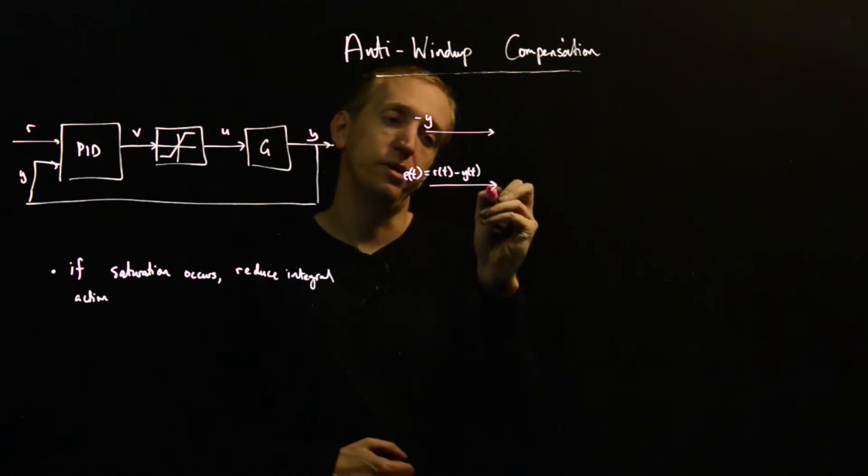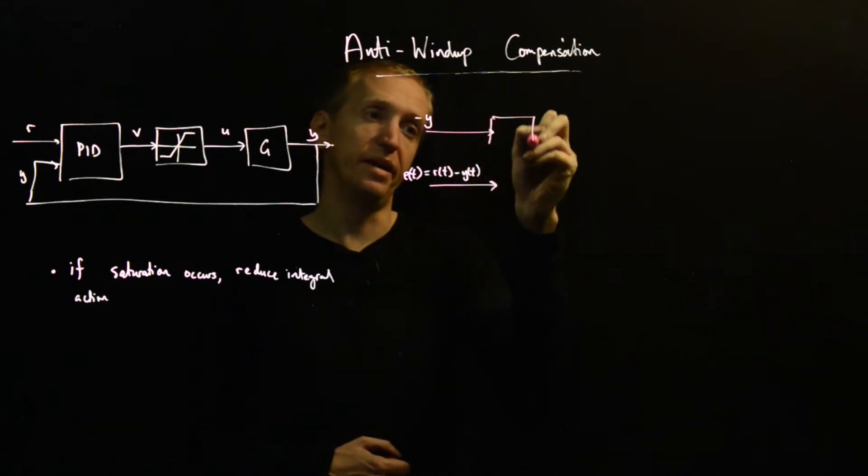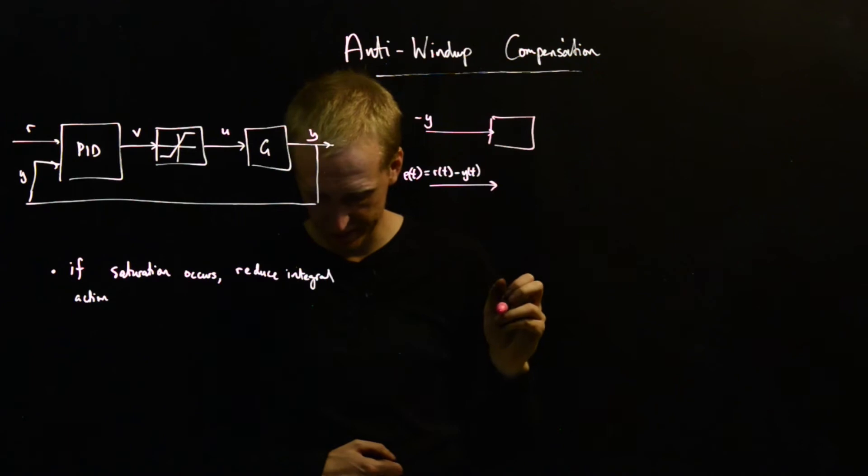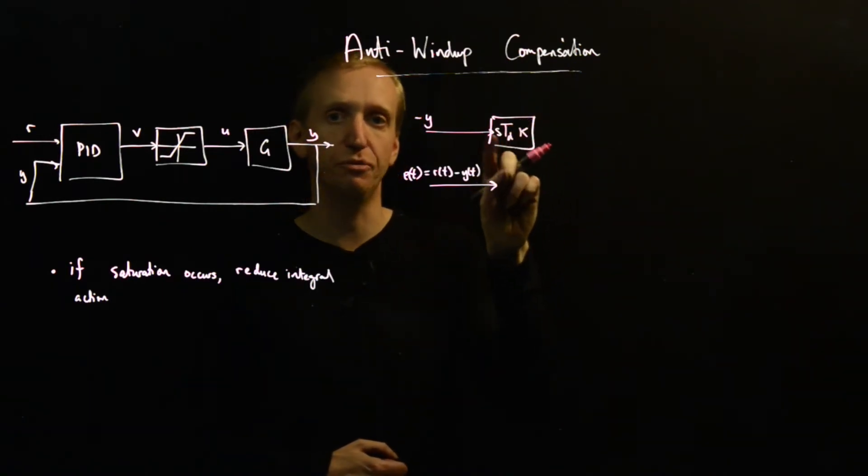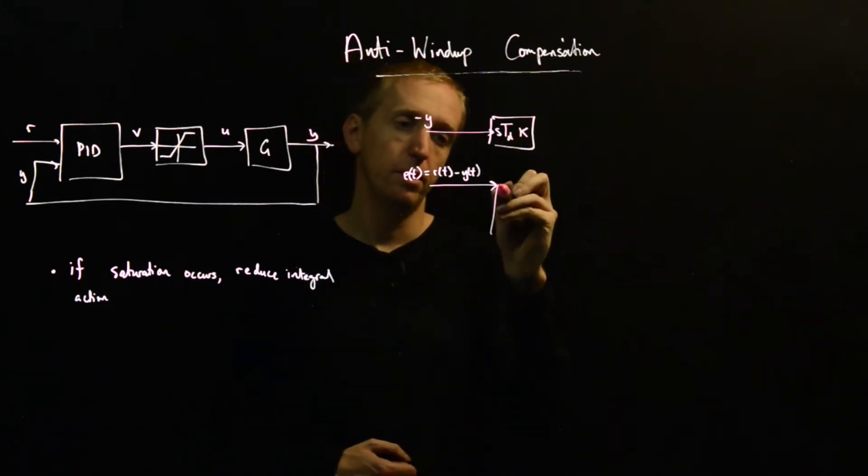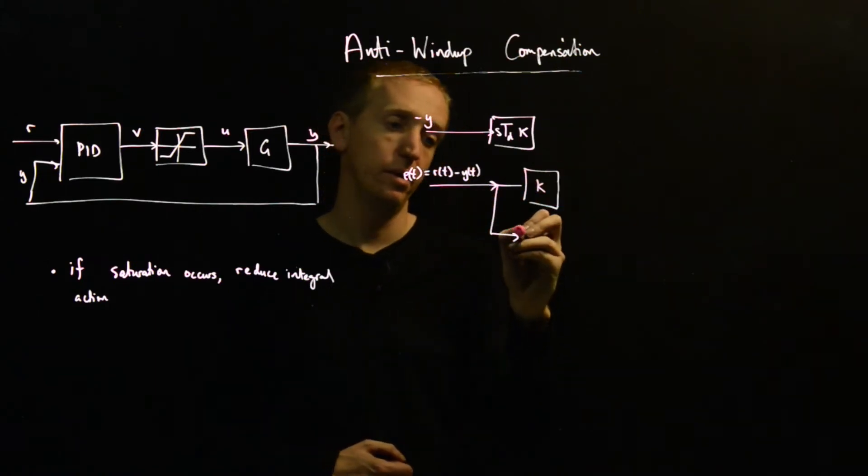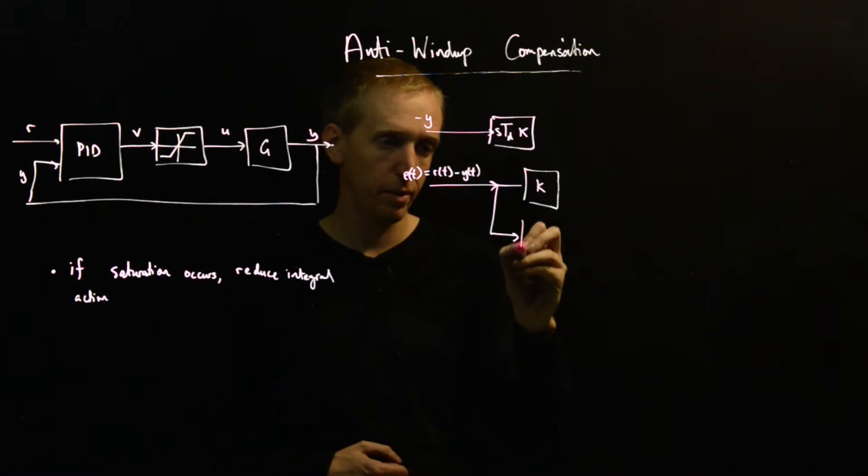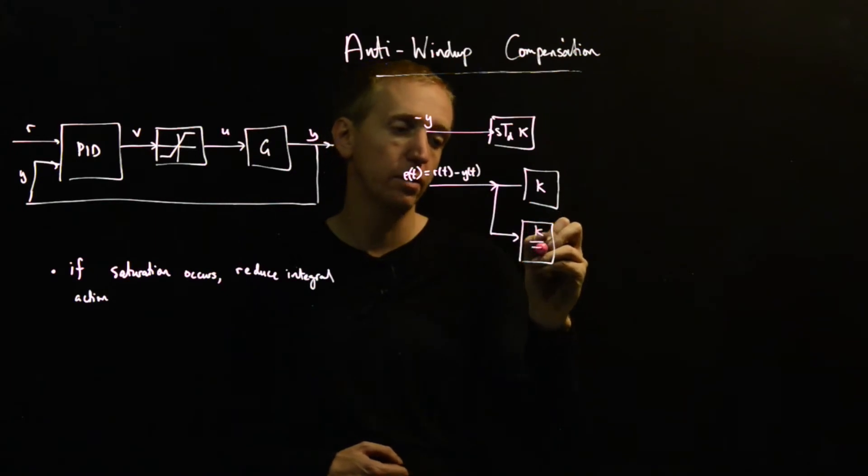And so what does the PID controller do? Well, it takes as input this error and also minus y. And then we differentiate the y signal. So we have a T_D. So these are two constants, T_D and K. This is like our differentiator constant. This K here, this is our proportional constant. And then we split this signal in two. And so we get a proportional term here, K, that acts on the error.